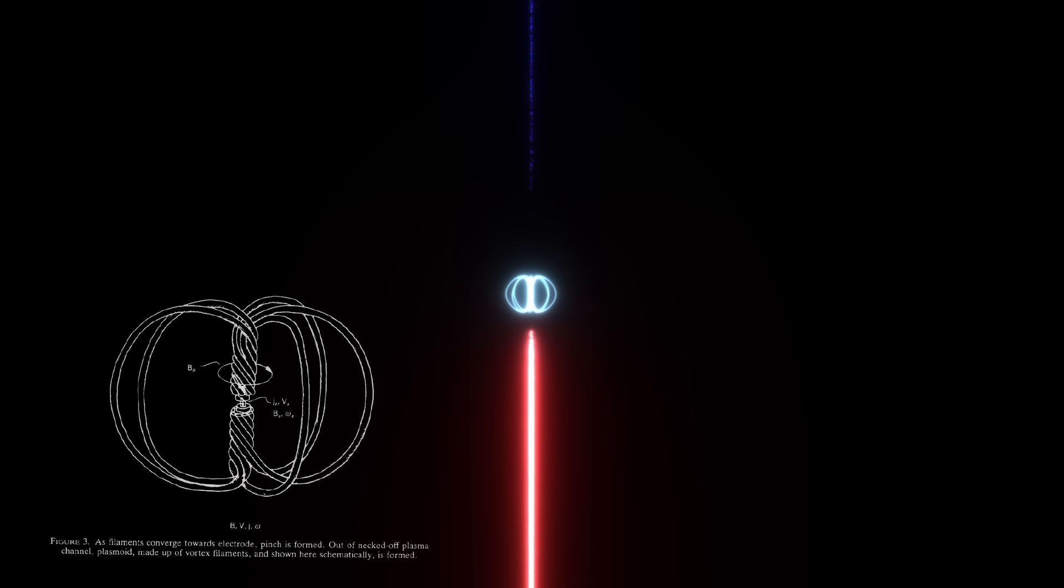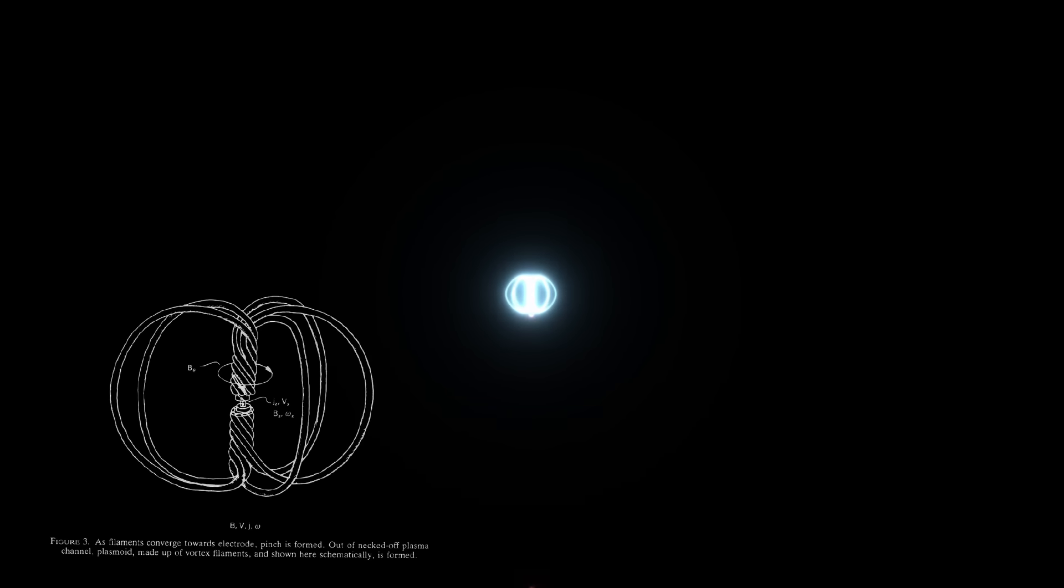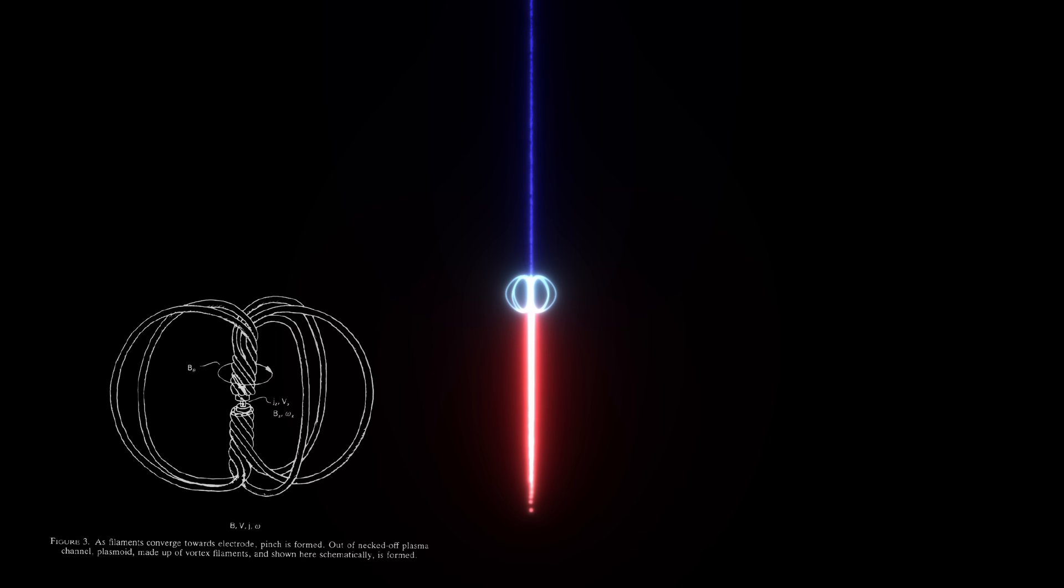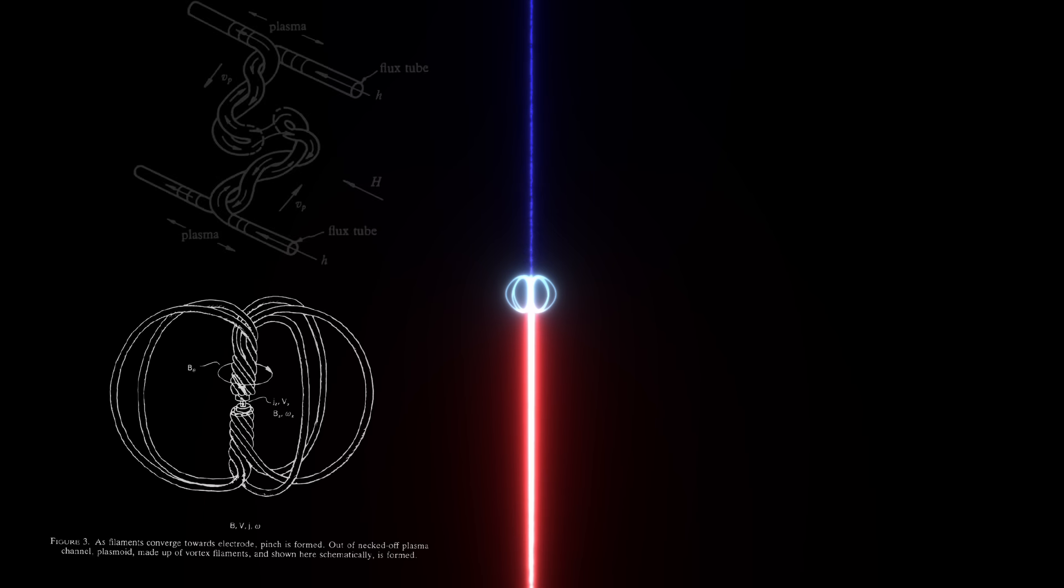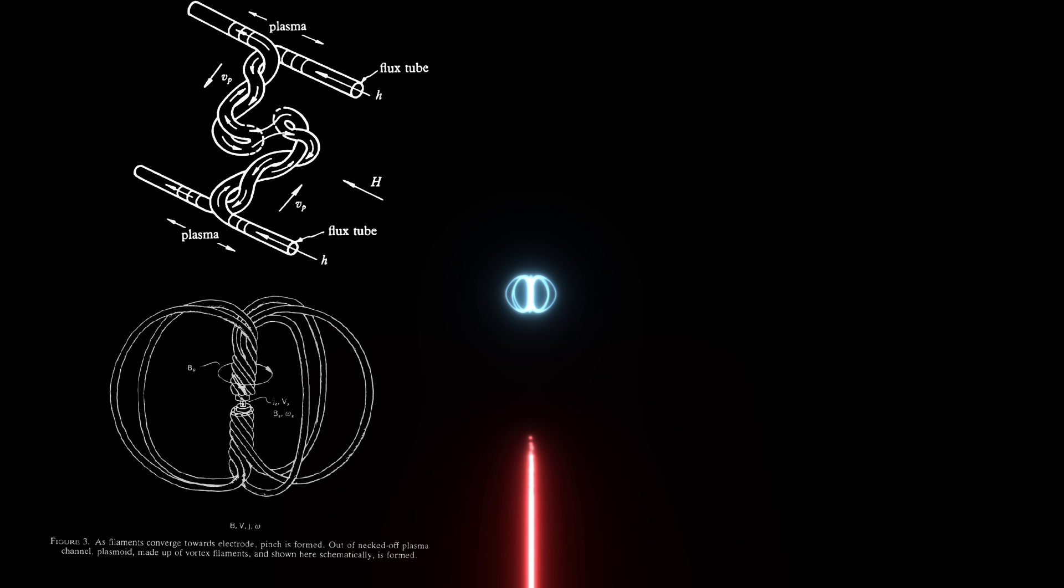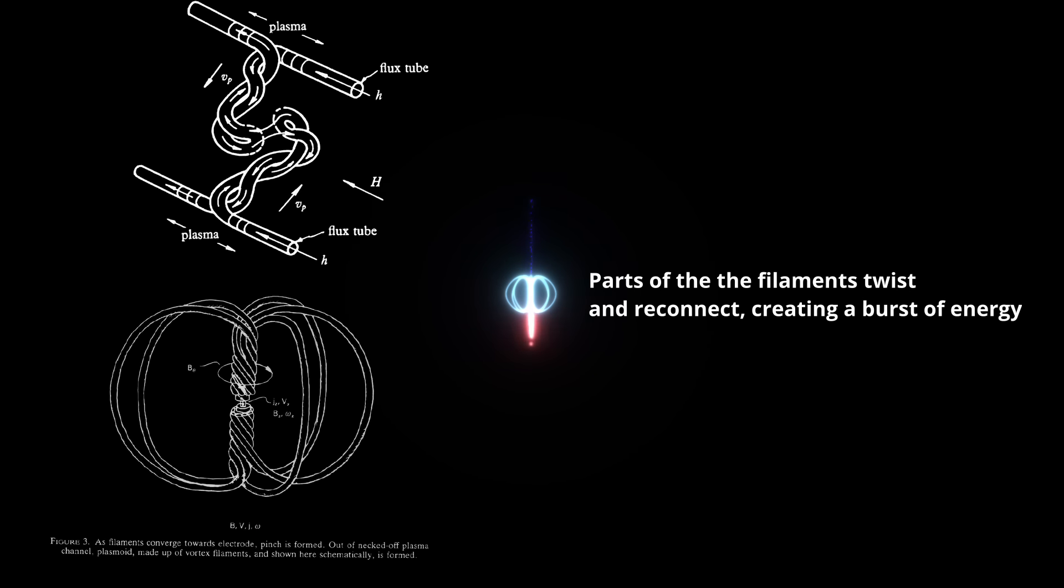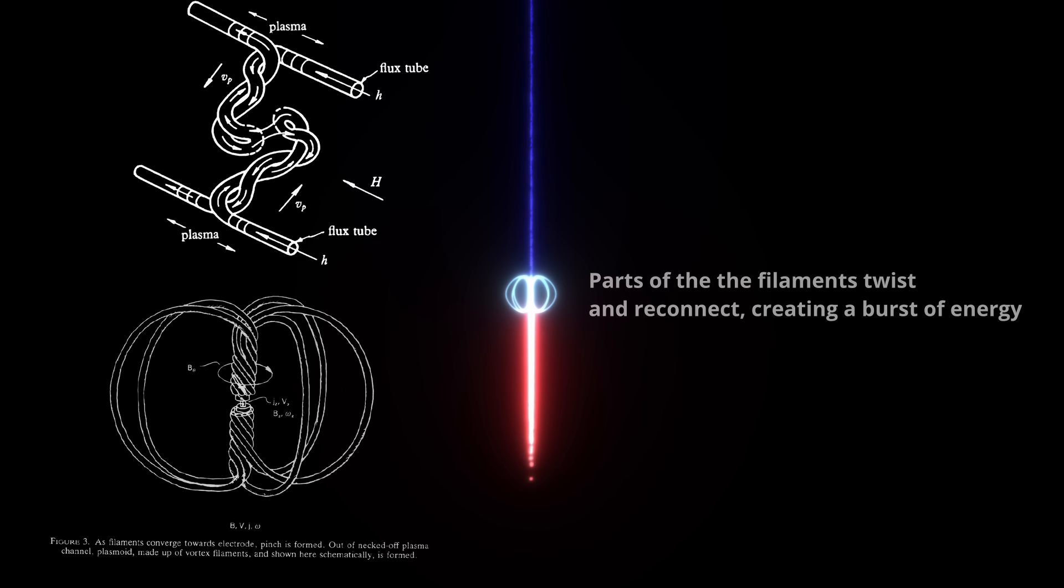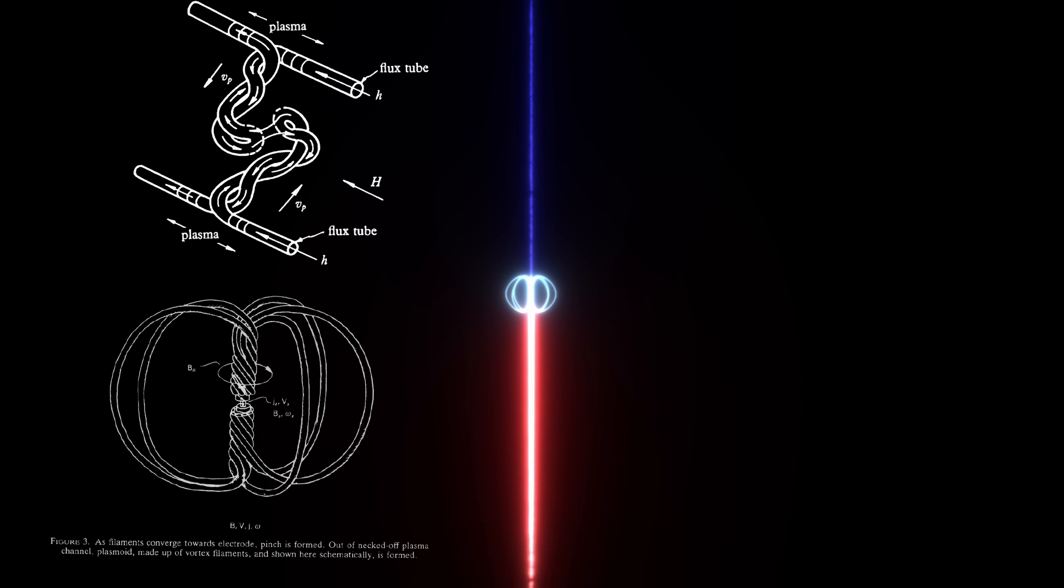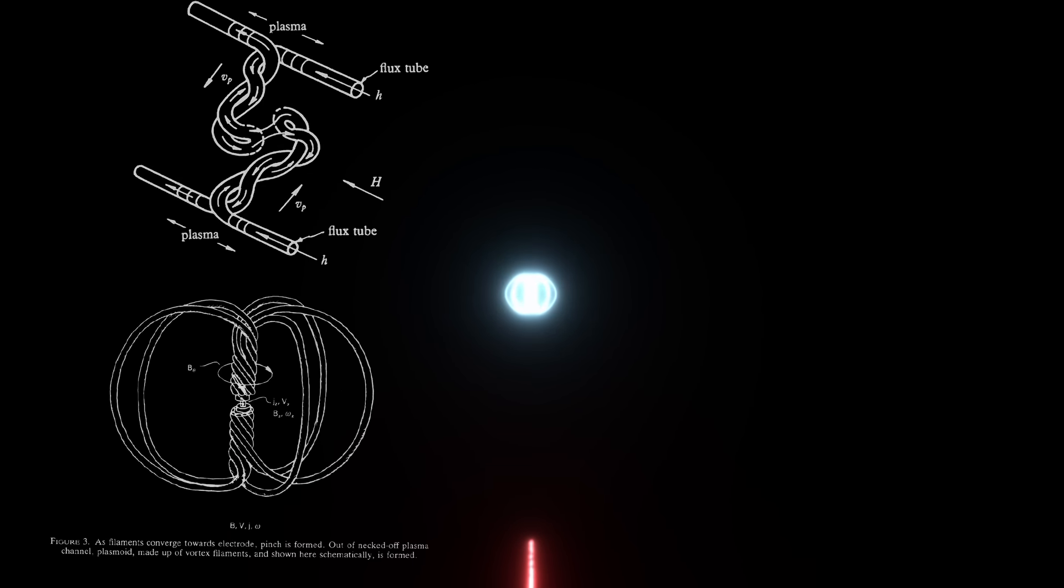According to Lerner's model, the jets observed in AGNs are not continuous streams, but rather pulsate or pulse intermittently. Each pulse of the jet is powered by a specific part of the plasmoid. As part of the plasmoid is used up and undergoes a reconnection process, where magnetic field lines within the plasma reconnect and release energy, a new branch or segment of the plasmoid becomes active. This process results in a series of pulses where each pulse corresponds to a localized release of energy and material from the plasmoid into the jet.